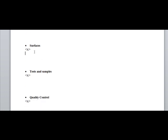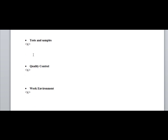For tolerances and test samples: if a sample is required before the worker proceeds, you specify that here. For example, he may need to build five square meters of brickwork, call for inspection, and only continue once the benchmarked sample is approved. If it's disapproved, he must take it down and redo it.